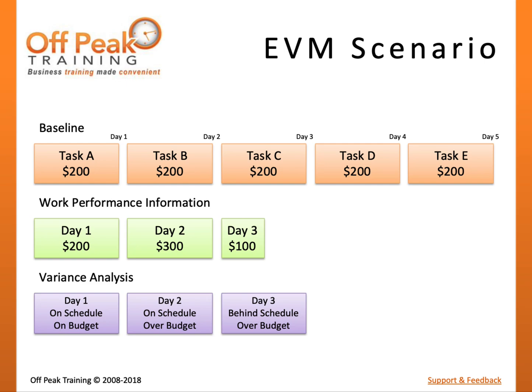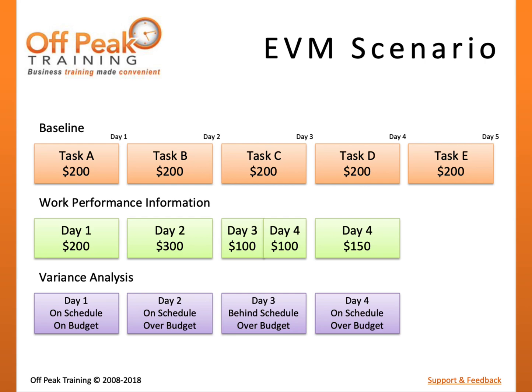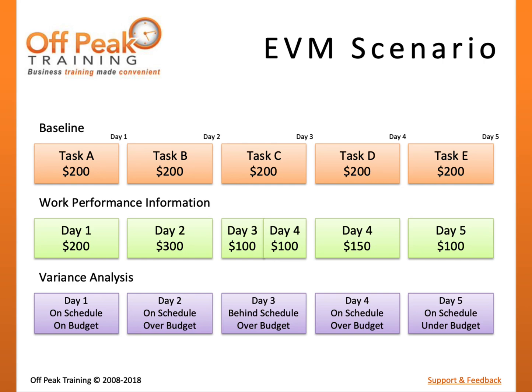On Day 4, you finish Task C and Task D and spend $150. We are now back on schedule but slightly over budget — we have spent $850 and only completed $800 worth of work. On Day 5, you finish Task E and spend $100. We have finished the project on schedule and under budget, completing $1,000 worth of work in 5 days for a total cost of $950.